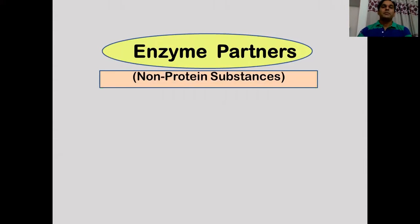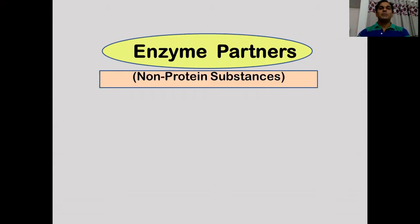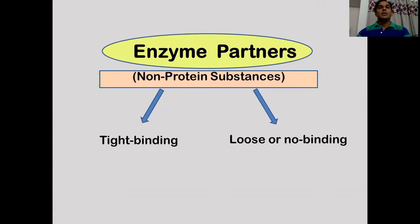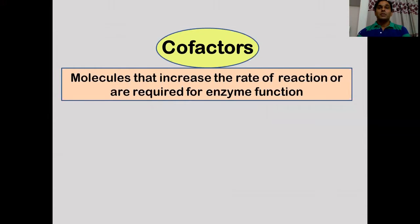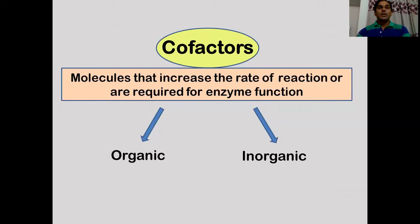Cofactors are enzyme partners and non-proteinous substances in nature. Just as we rely on other people at certain times in life, enzymes benefit from close friends called cofactors. Some enzymes need a helper or partner and some don't. These enzyme helpers may either bind very tightly — in which case they are called prosthetic groups — or loosely bind, in which case they are called cofactors.